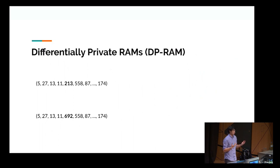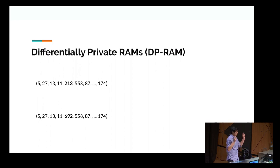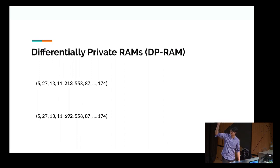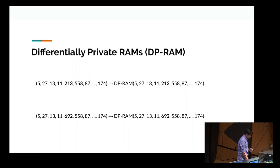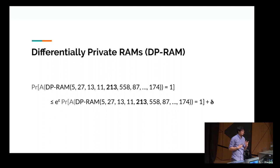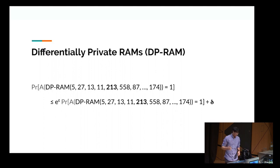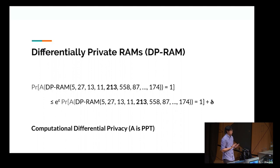So what is a differentially private RAM? It's a weakening of Oblivious RAM. We consider two sequences that are now neighboring — they differ in exactly one location. We want to compile these logical accesses to logical indexes and convert them to physical accesses which are private. Since we're doing differential privacy, they should satisfy the standard differential privacy notion, which is epsilon and delta for composition. Throughout this talk, we're considering computational differential privacy, so this adversary A is probabilistic polynomial time.